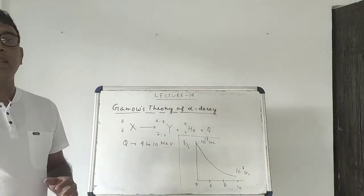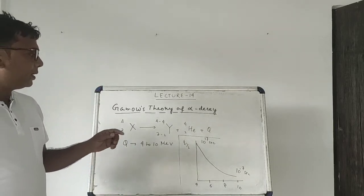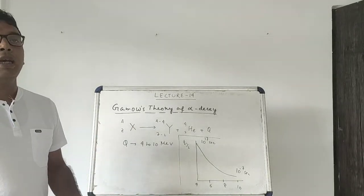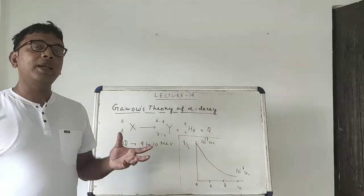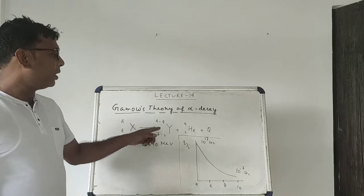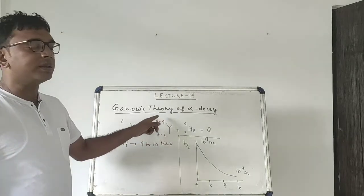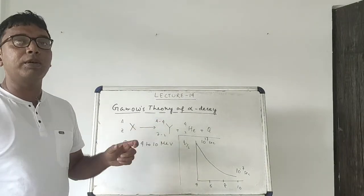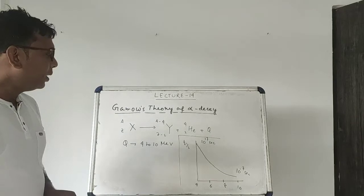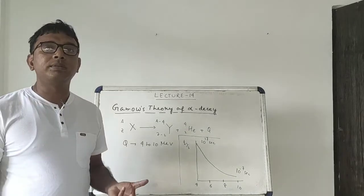In the last lecture we talked about alpha decay: from an unstable nucleus, a helium nucleus comes out so that the unstable nucleus becomes stable. So when it emits a helium nucleus, X becomes Y with 4 fewer nucleons and 2 fewer protons, along with an amount of energy Q. This energy Q varies from 4 to 10 mega electron volts for alpha decay.